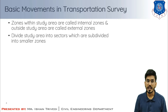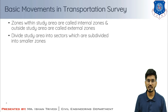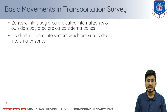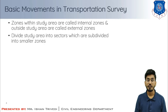Zones outside the study area are called external zones — that is, outside the cordon line or boundary. In large study projects it is more convenient to divide the study area into sectors, which are further subdivided into smaller zones. In addition to the external cordon lines, there may be a number of cordon lines arranged as concentric rings to check the accuracy of survey data. Screen lines running through the study area are also established to check the accuracy of data collected from home interview surveys.